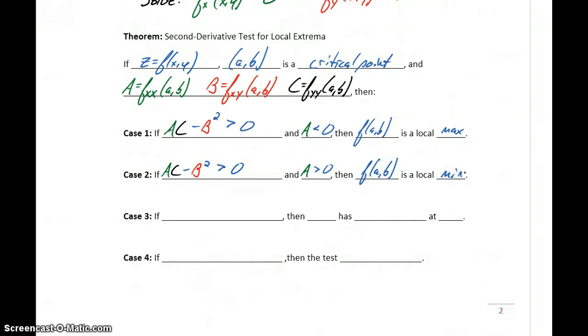So this isn't a terribly intuitive process. There's no sign chart that we can really construct to help us understand the behavior of our function. It comes down to calculating these three values, evaluating A times C minus B squared. In either case, if we get a positive value, then the next step is to look at our value for A, and whether that's negative or positive determines whether we have a maximum or a minimum.